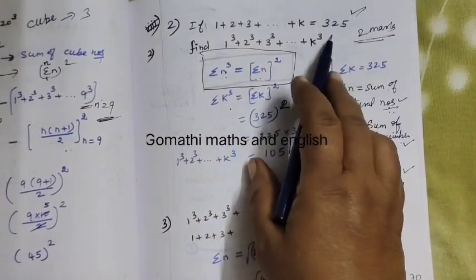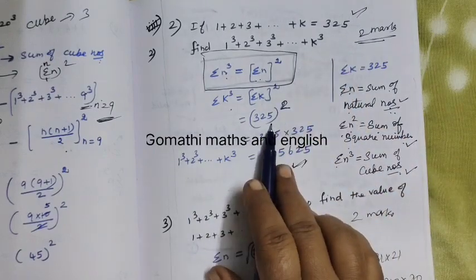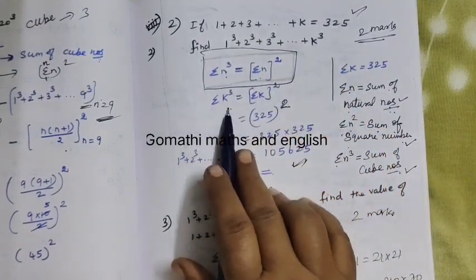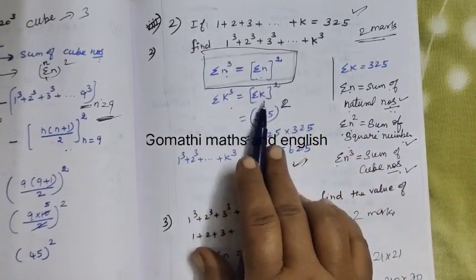So this is our answer 325. Sum of the natural number is 325. So write 325. This is k. This is general formula. Last number k means you are writing k.